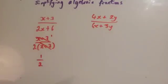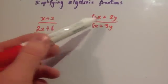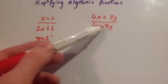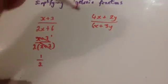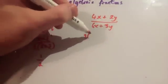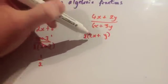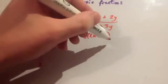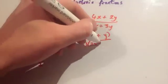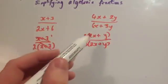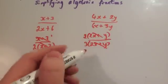Now let's look at this algebraic fraction: you've got 4x plus 2y over 6x plus 3y. The top line can be factorised by taking 2 out, and the bottom line by taking 3 out as a common factor. Factorising the top gives 2 bracket (2x plus y), since 4x divided by 2 is 2x and 2y divided by 2 is y. The bottom becomes 3 bracket (2x plus y). The (2x plus y) terms cancel, leaving 2 over 3, which is two thirds.